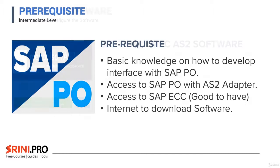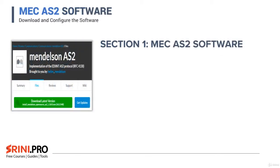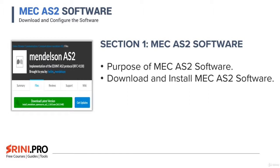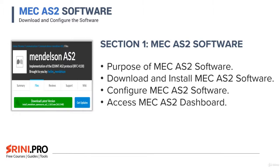Let's look at the sections in this course. In section one, we will look at MECH AS2 software — MECH being the Mendelssohn AS2 software. This software is used to send and receive messages over AS2. In the first lecture, we will see the purpose of this MECH AS2 software and where and how you will use it in your interface development. Then I'll show you how to download, install, and configure MECH AS2 on your local machine, and we'll access the MECH AS2 dashboard.